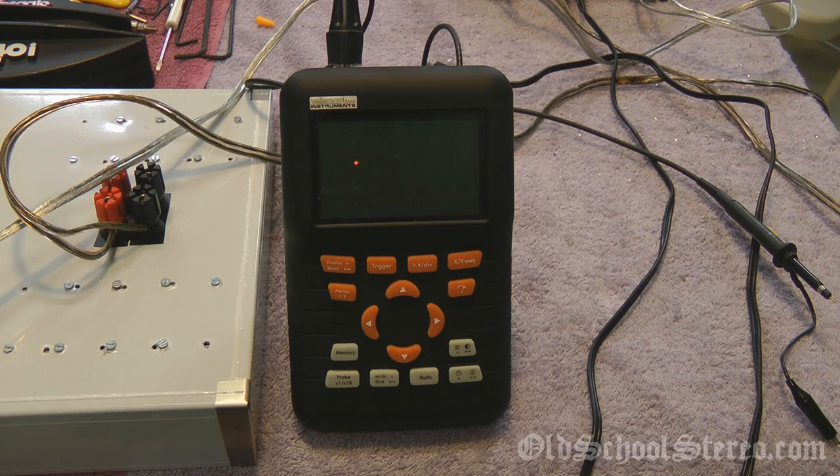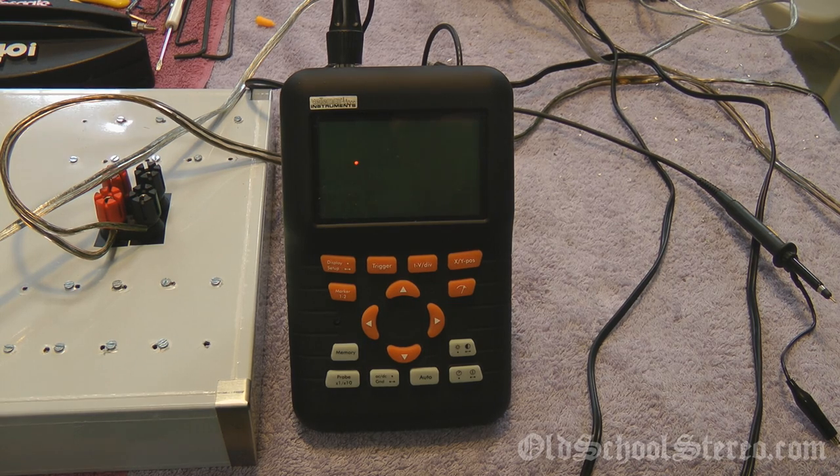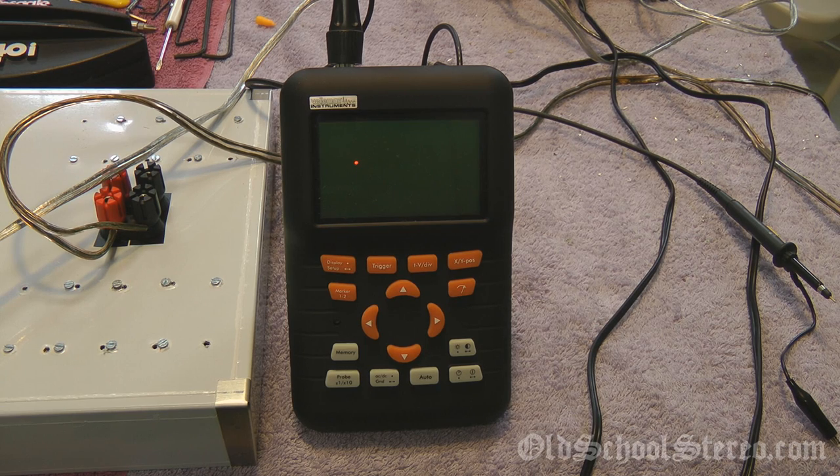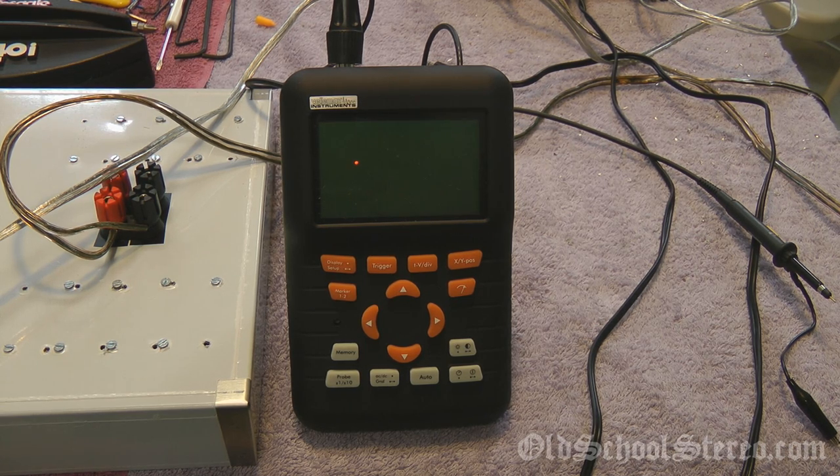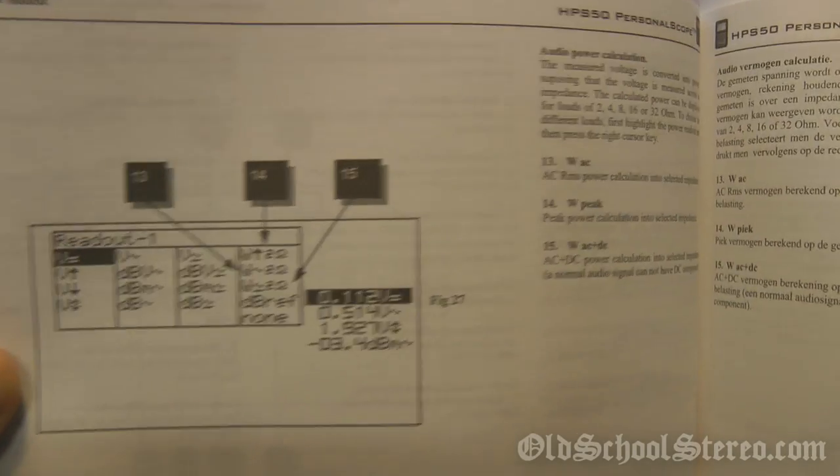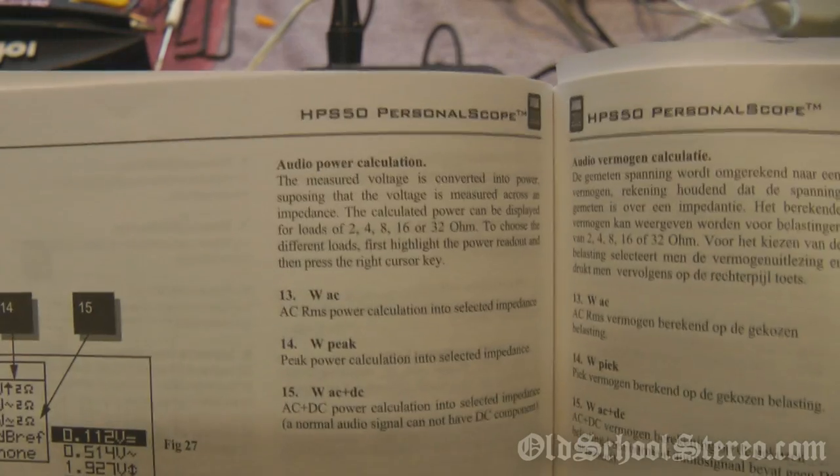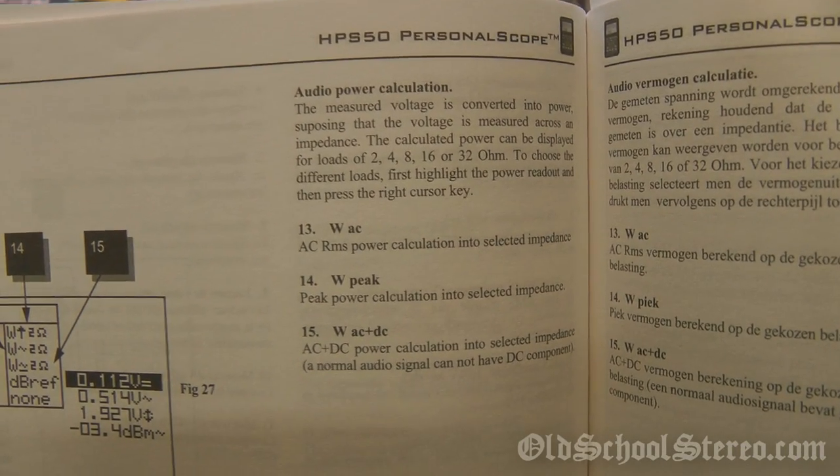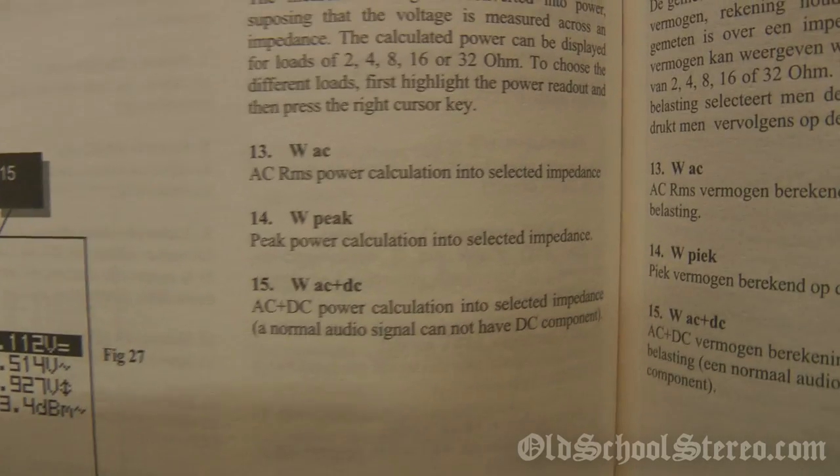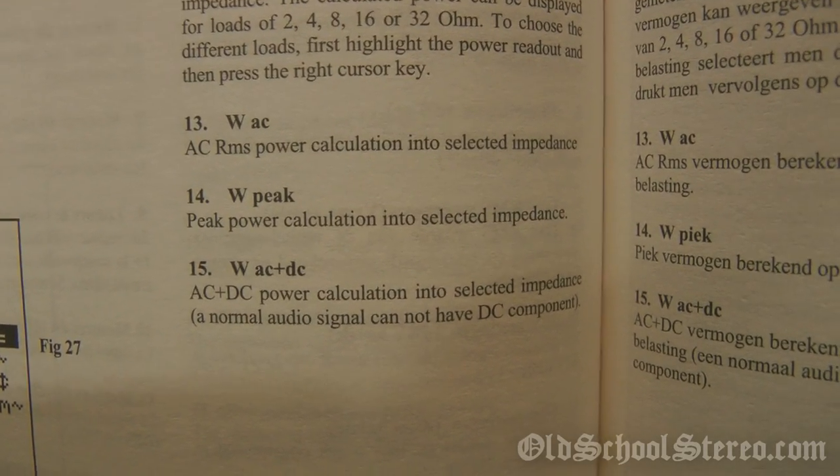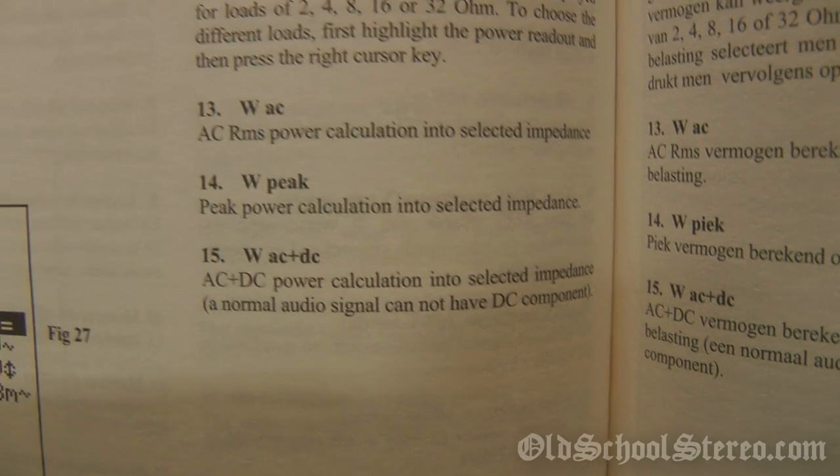The other thing about the Vilemon HPS series, including the 10, the 40, and the 50, there may be some other models as well, is this has an actual built-in audio test, which it does the calculations for you to give you, as you can see, RMS watts, peak watts, or AC plus DC. We don't use that one.